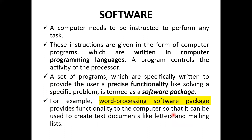A computer needs to be instructed to perform any task — the computer doesn't do anything on its own. These instructions are given in the form of computer programs, written in programming languages such as C, C++, Java, and Python. The program controls the activity of processing. A set of programs specifically written to provide a user with precise functionality — like solving a specific problem — is called a software package. For example, a word processing software package provides functionality to create documents like letters and mailing lists.